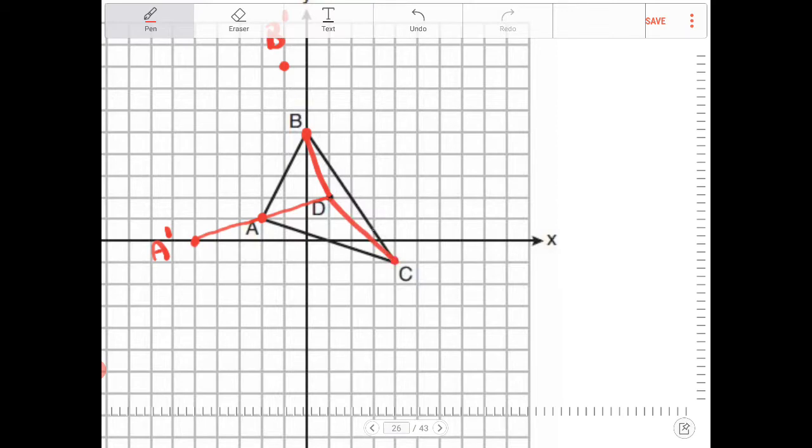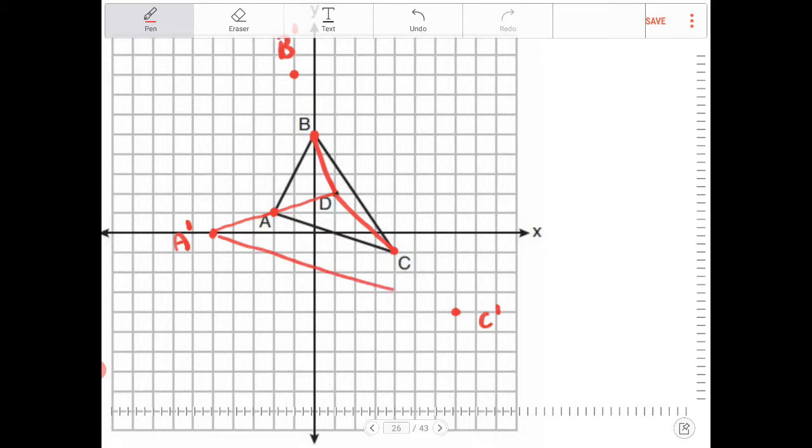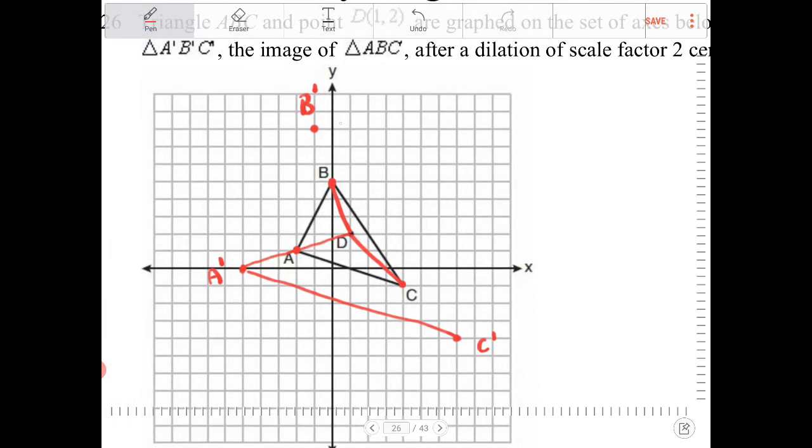And then for point C, we go down 3 and over 3. So from C, we're going to go down 3 and over 3. And this is going to be the location of C'. And then we connect, and we connect, and we connect.